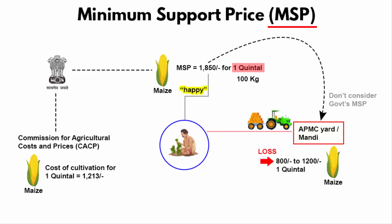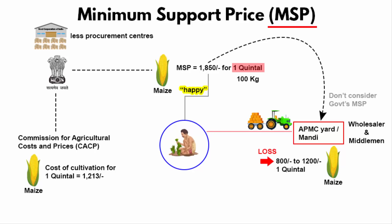Farmers are very much happy with the government rate, but they are not able to receive the benefit because wholesalers or middlemen are adjusting the price. On one hand, the government has fewer procurement centers in the country. On the other hand, due to the fear of crop deterioration, a farmer is forced to sell crops to the middlemen at a lesser price. Sometimes, even the middlemen pay less based on quality factors so that they can make a good profit.